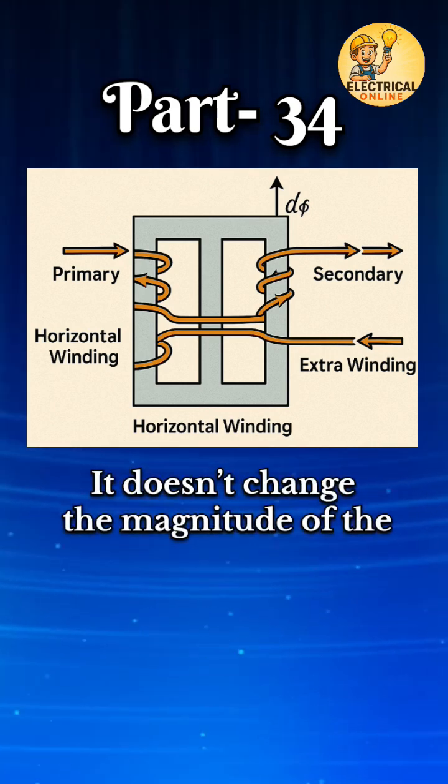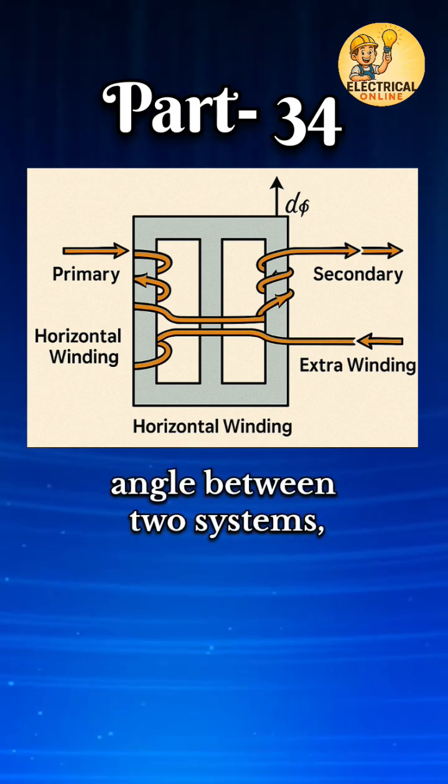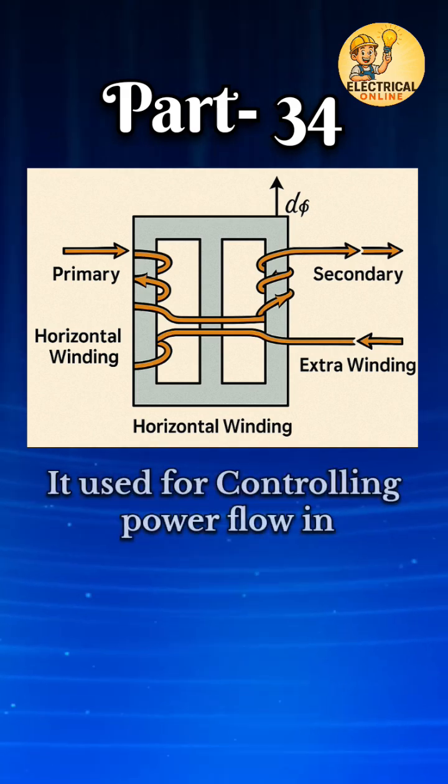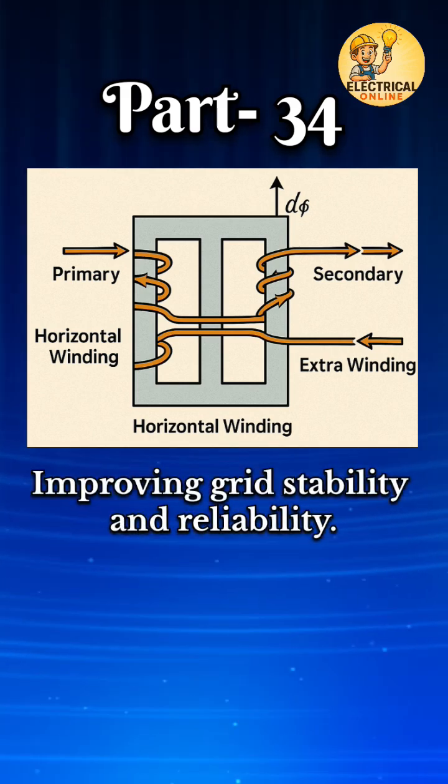It doesn't change the magnitude of the voltage much. Instead, it shifts the angle between two systems, guiding how and where power flows. It is used for controlling power flow in interconnected grids and improving grid stability and reliability.